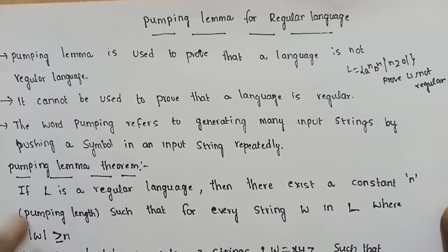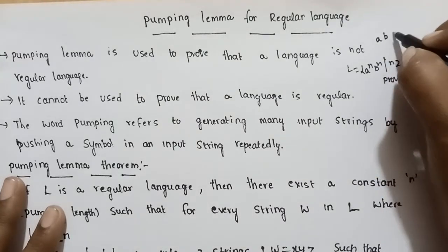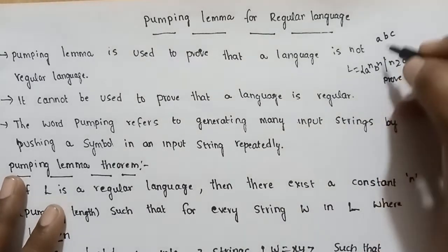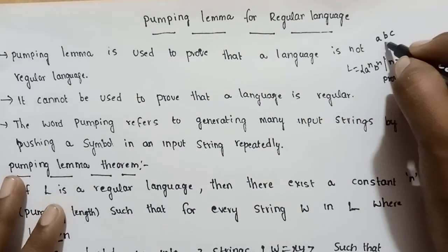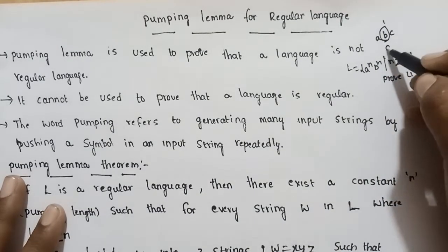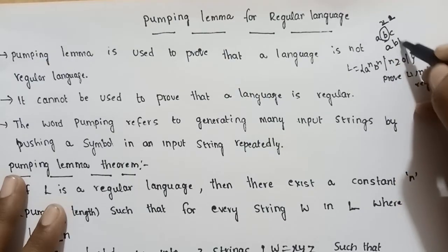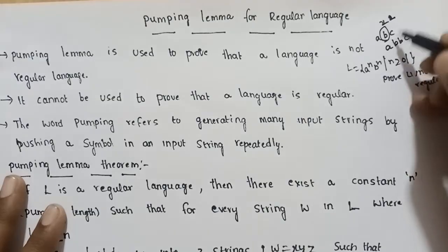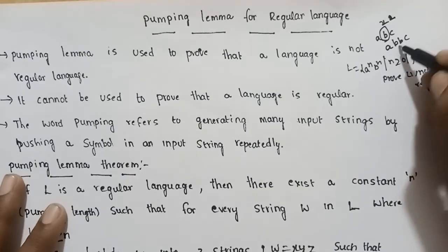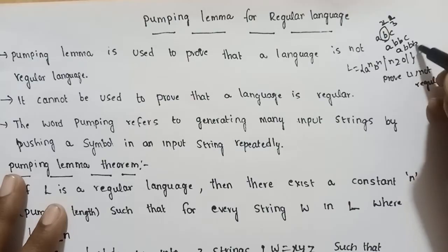For example, if the string is A, B, C — in this string, B is the repeated input symbol. One time push gives A, B, C. Two times push gives A, B, B, C. Three times push gives A, B, B, B, C.